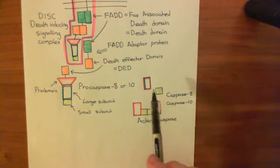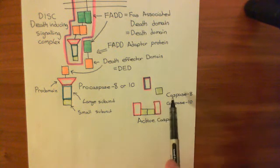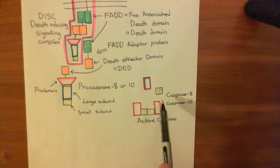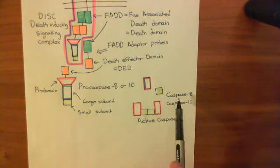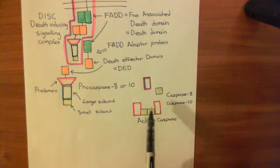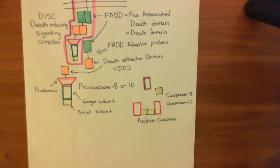I should stress that large and small subunits of caspase 8 can only form a complex with other large and small subunits of caspase 8. They can't form it with large and small subunits of caspase 10. So you form caspase 8s and caspase 10s, and you do not form chimeras of the two.